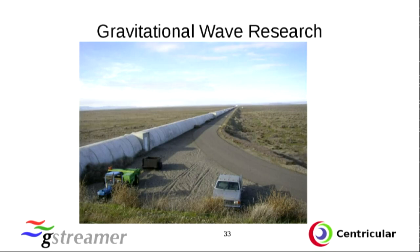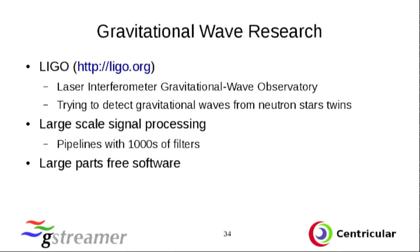Let's get to the last really interesting projects. You've probably seen pictures of the huge setups used for gravitational wave research — a few kilometers in diameter, really huge stuff. The one I'm talking about is LIGO. You may have heard about it recently in the news — there were rumors that they actually found something. They're trying to find traces of gravitational waves from neutron stars rotating around each other. They use GStreamer for large-scale signal processing, with huge pipelines containing thousands of filters. Large parts of their software are free software and available on their website.